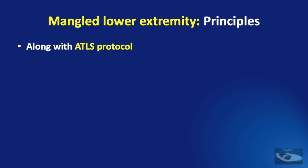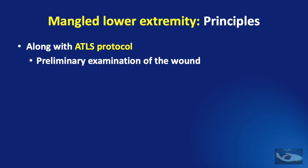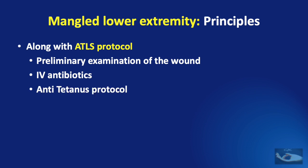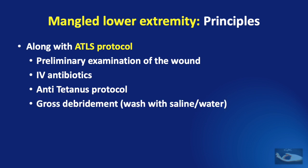It is only after securing the life of the patient that definitive care of the mangled lower extremity needs to be considered. This can also be initiated alongside the ATLS protocol and would consist of a preliminary examination of the wound, intravenous antibiotics to prevent infection, the regular anti-tetanus protocol, gross debridement with a wash of saline or water, a sterile dressing, and splinting of the fractured limb.